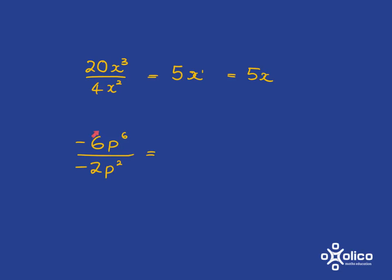If we look at this one, let's look at the numbers first. Negative 6 divided by negative 2, that is just 3. And then we move to the exponents. We've got 6 p's multiplied together divided by 2 p's multiplied together. So we're going to have p to the 6 minus 2, so it's going to be p to the power of 4.